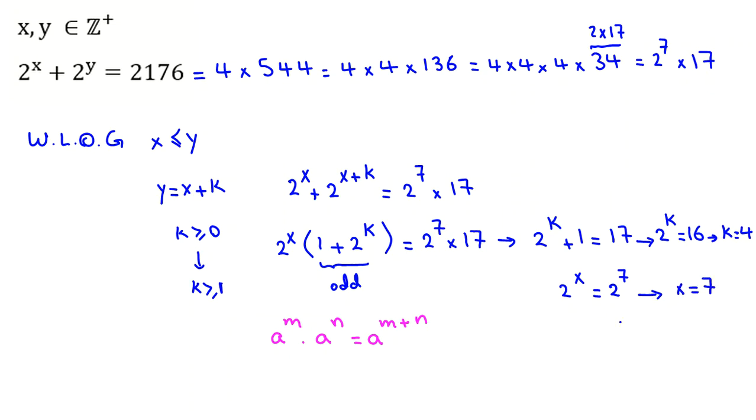Because y is x plus k, so y is 7 plus 4, which is 11. So one answer is x equals 7, y equals 11.